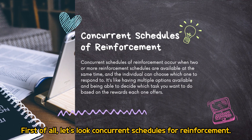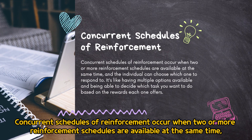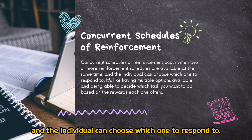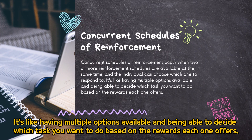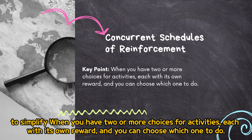First of all, let's look at concurrent schedules of reinforcement. Concurrent schedules of reinforcement occur when two or more reinforcement schedules are available at the same time, and the individual can choose which one to respond to. It's like having multiple options available and being able to decide which task you want to do, based on the rewards each one offers. To simplify: when you have two or more choices for activities, each with its own reward, and you can choose which one to do.